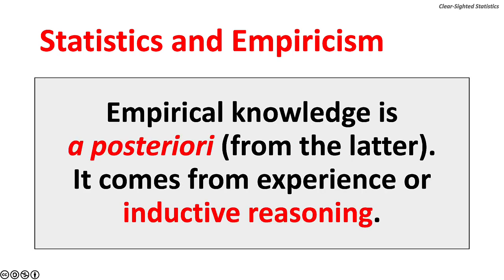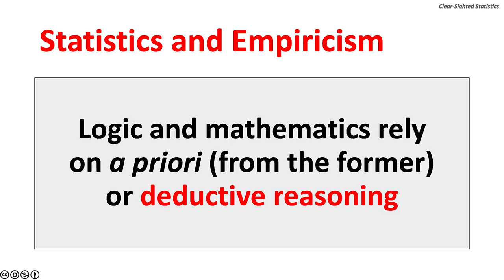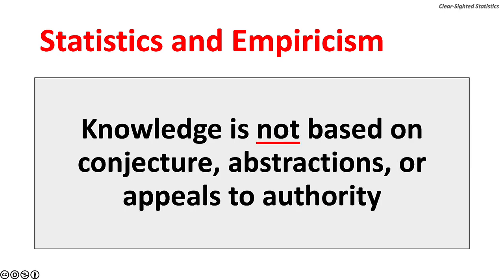Statistics is based on evidence — data derived from sense perception. Empirical knowledge is a posteriori, from the later, coming from experience or inductive reasoning. Logic and mathematics rely on a priori, from the former, or deductive reasoning. Empiricists claim that knowledge is not based on conjecture, abstractions, or appeals to authority.